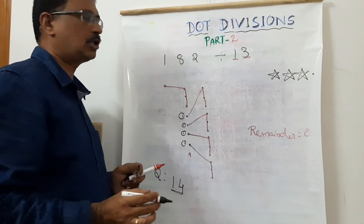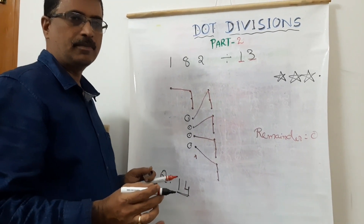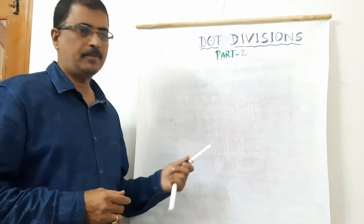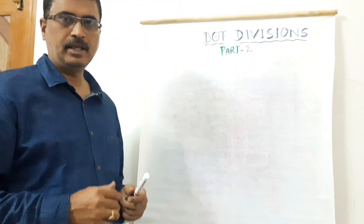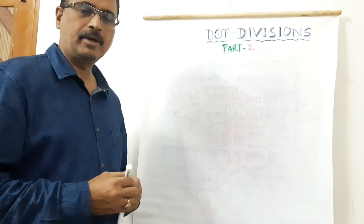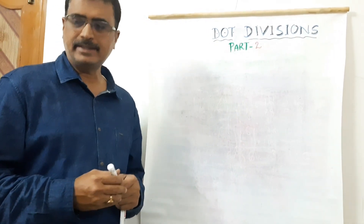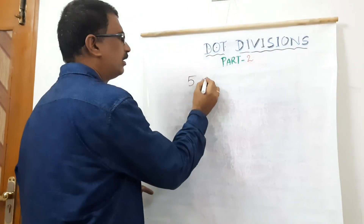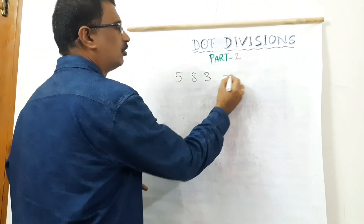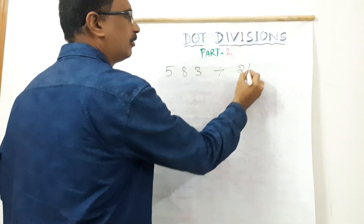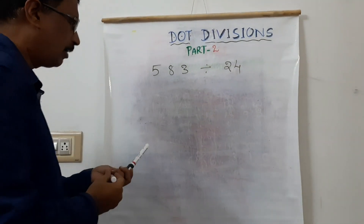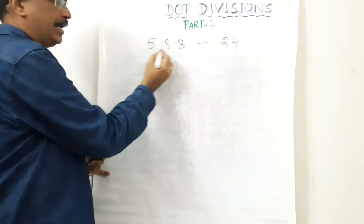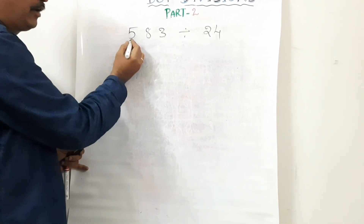Now I will show you another example. We will work with 2483 divided by 58. The number is 8, 100, 5 — setting up the places for this two-digit divisor problem.